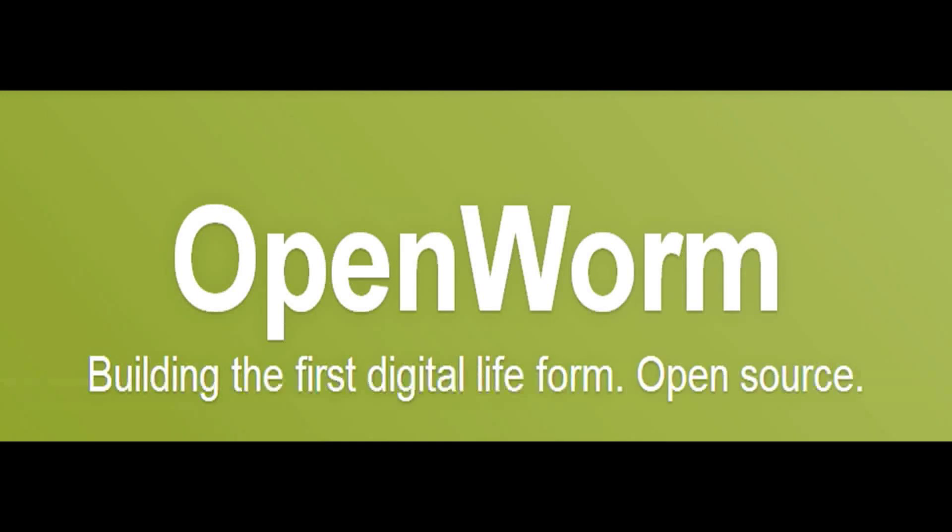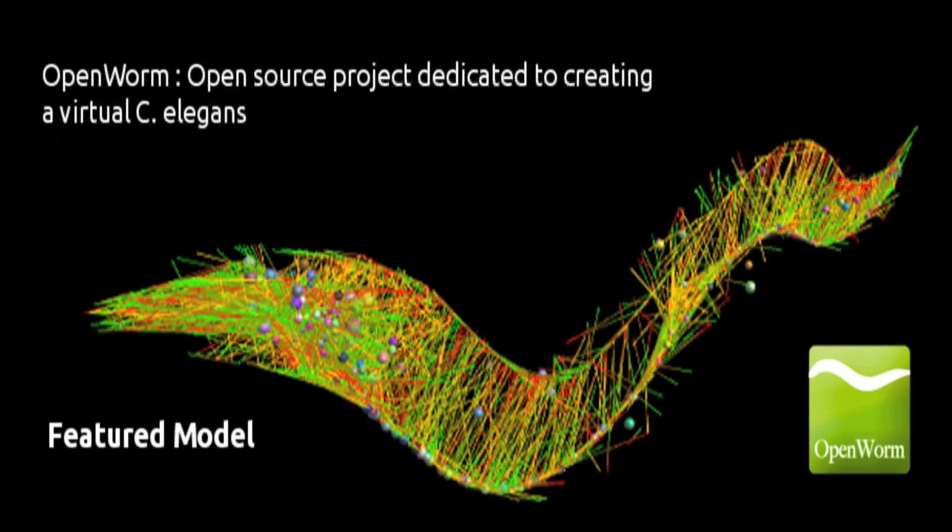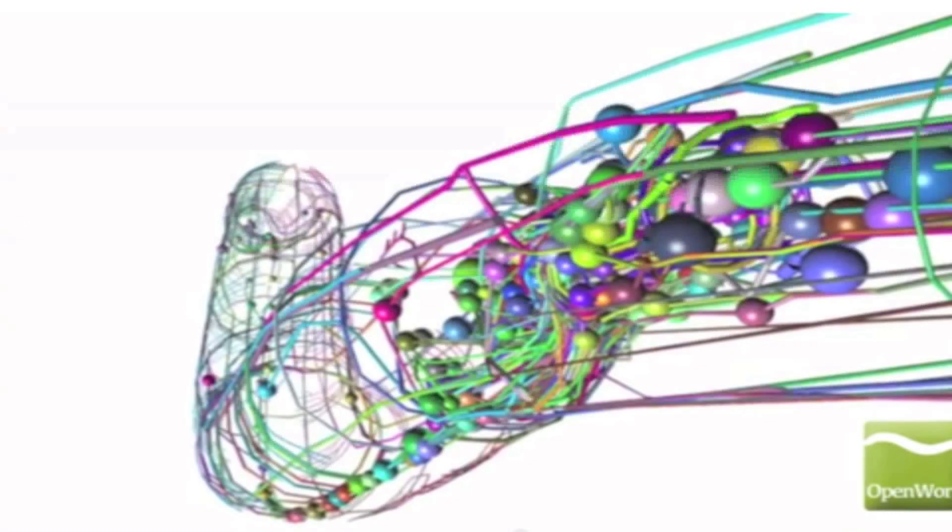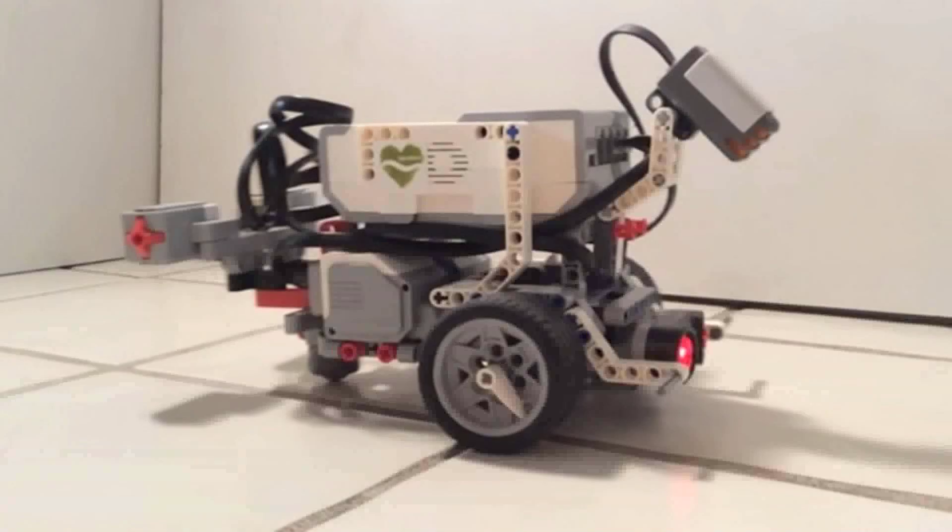Now scientists at Open Worm have fully digitized the brain of the C. elegans, and soon you'll be able to download it onto your computer so you can fiddle around with it. They have also put this digitized worm's brain into a Lego robot, and the results are pretty fascinating.